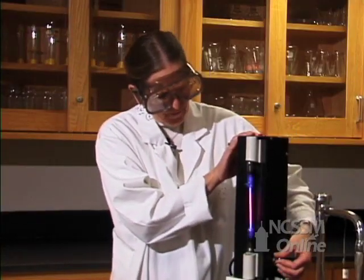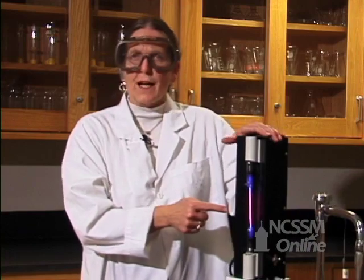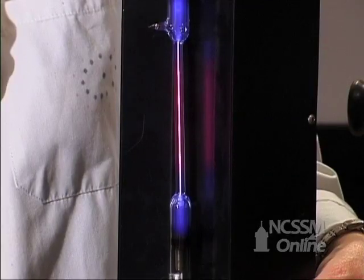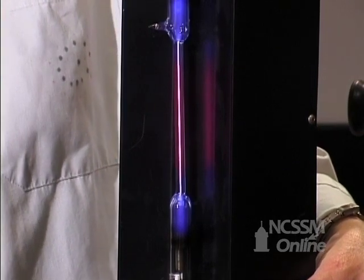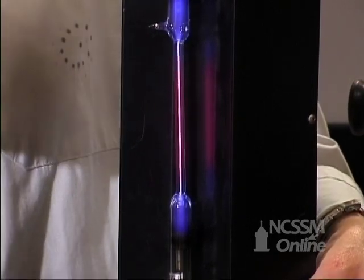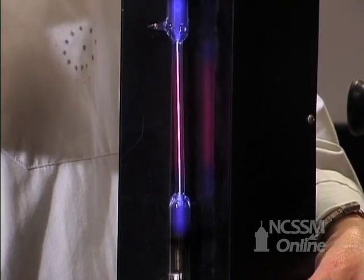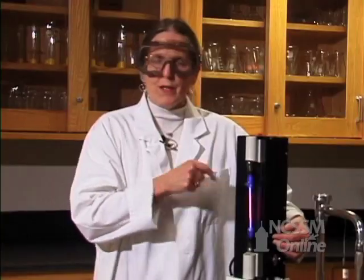And when we do that, we excite that hydrogen electron, it moves to an outer energy level, and then since we're on 60 cycles per second, it's going to fall back, and as it does, it emits energy. So we want to measure that.